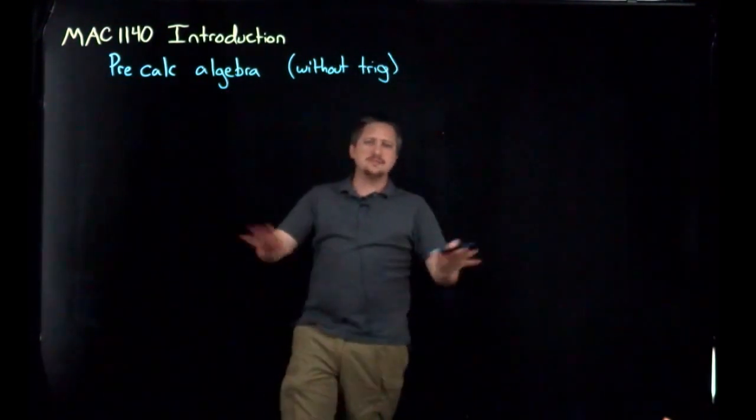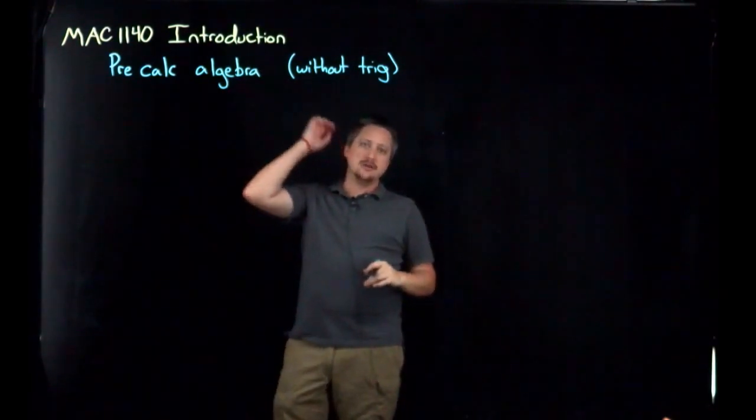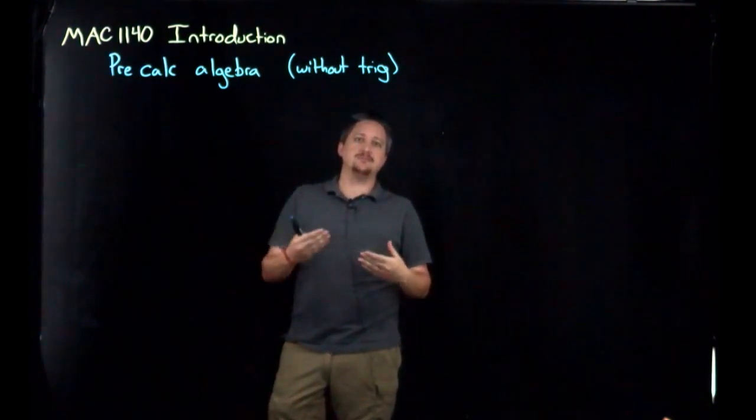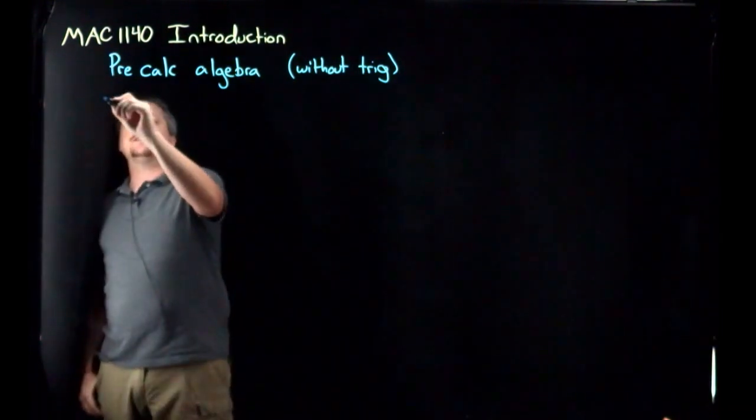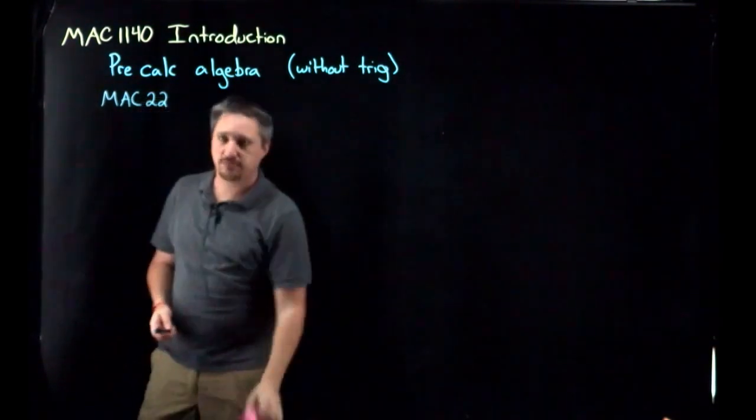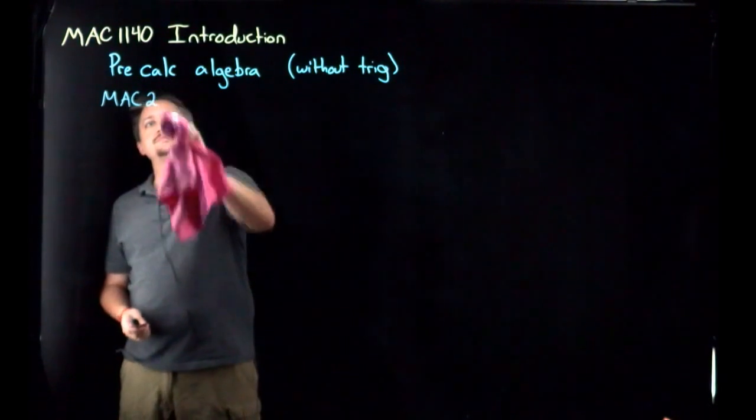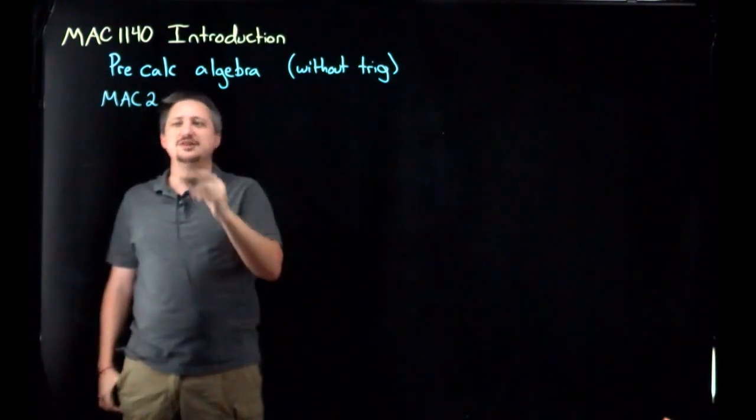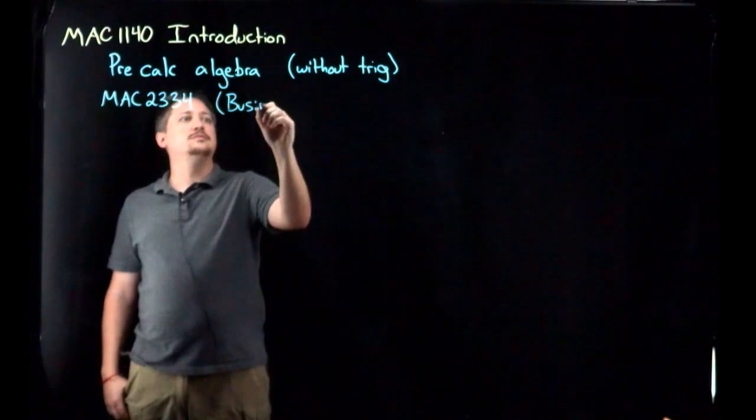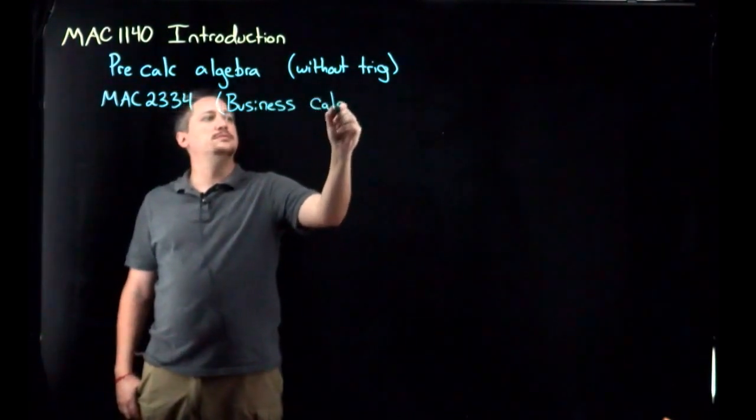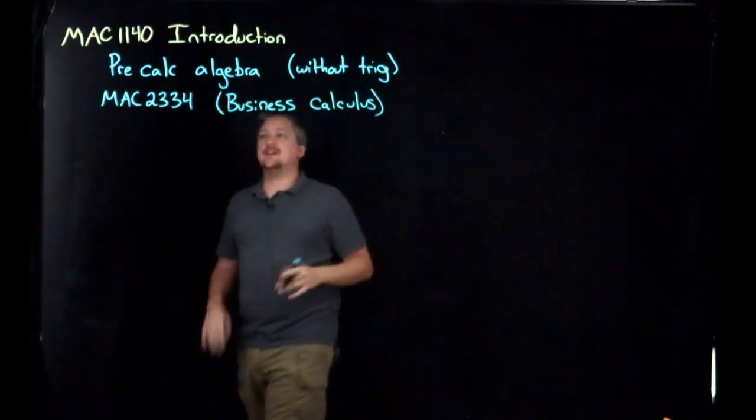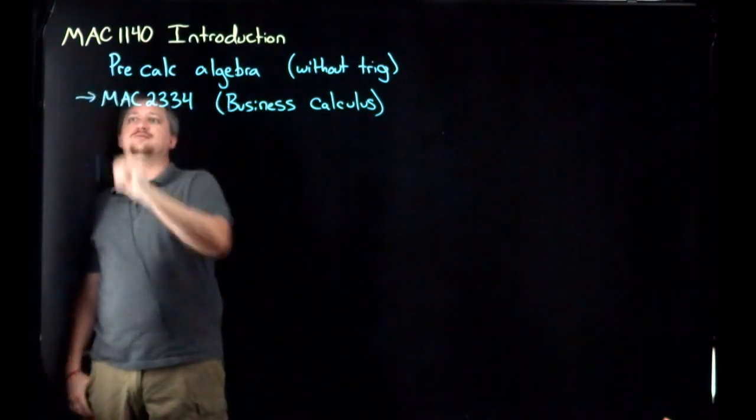Just some technical things right off the bat. MAC 1140 is primarily used as the pre-calculus for the non-trig calculus sequence or business calculus. The business calculus, that's going to be MAC 2334. This is the business calc. This is the primary sort of follow-up to this class.